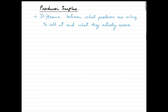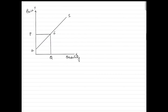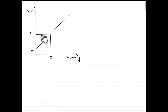Producer surplus is the difference between what producers are willing to sell at and what they actually receive. On a graph, it is generally a triangle above the supply curve and below the price level. With price on the y-axis and quantity on the x-axis, any area above the supply curve and below the price line represents producer surplus. This area is equivalent to triangle APE.